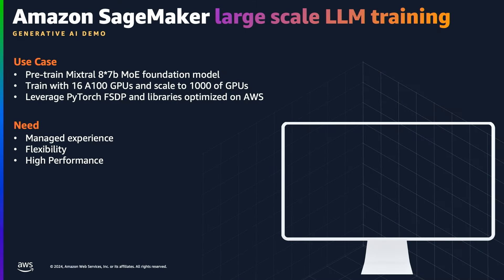Our use case includes training the Mixtral 8x7b model — specifically pre-training it from scratch. There are several reasons you would want to pre-train a model: maybe your use case involves a dataset and problem domain not well represented in existing trained models, or your requirements come from an industry like medical or finance where you need to keep your model secure and protected. The Mixtral model is a type of transformer model also called Mixture of Experts. It has multiple experts — essentially neural networks — and a gate network called a router that maps incoming tokens to one of these experts, making the architecture very efficient in terms of latency and performance.